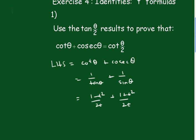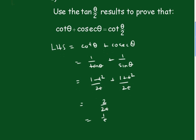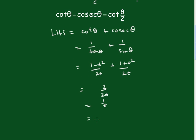Now we write that with a common denominator of 2t. So that would be (1 minus t squared) plus (1 plus t squared), which gives us 2 over 2t, which is 1 over t. And 1 over t is cot(θ/2), which equals the right hand side.